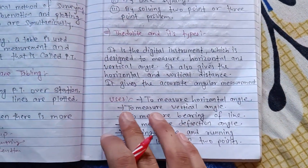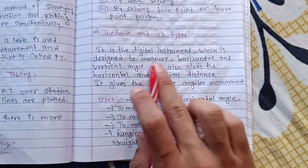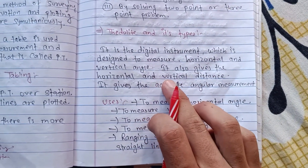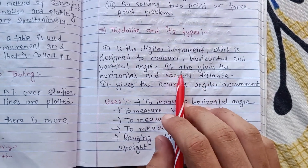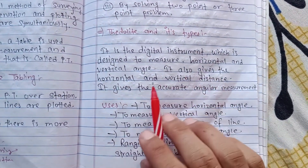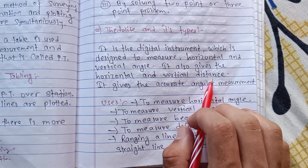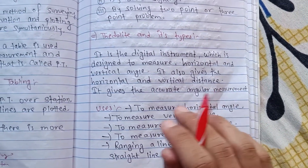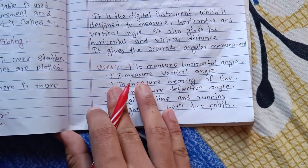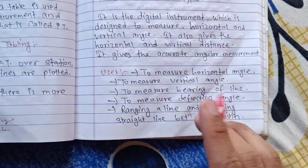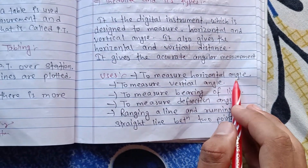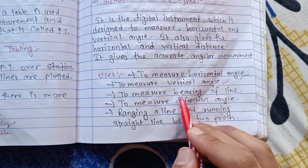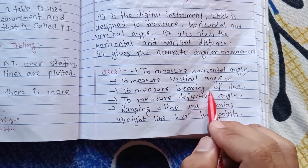A theodolite is a digital instrument designed to measure horizontal and vertical angles. It also gives horizontal and vertical distances. It is used to measure horizontal angle, vertical angle, bearing of a line, deflection angle, and for line ranging.